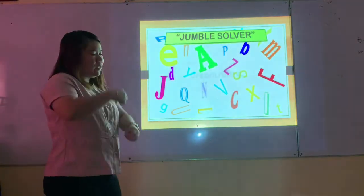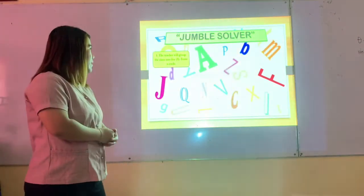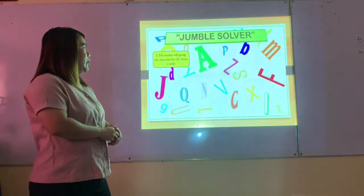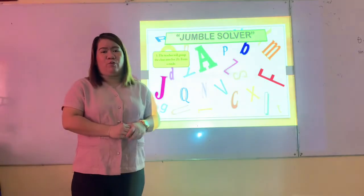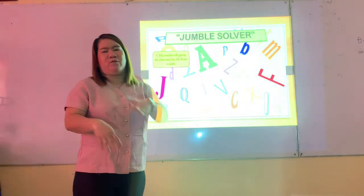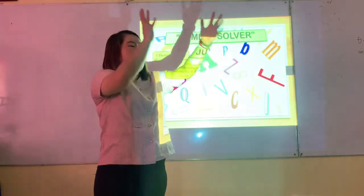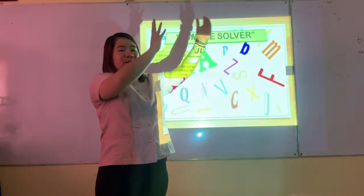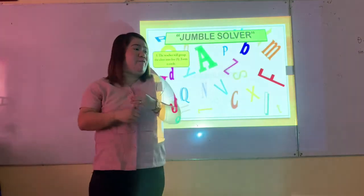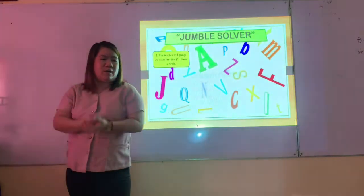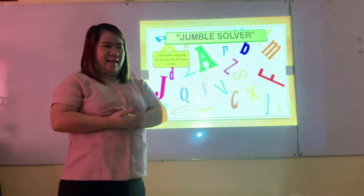Here are the instructions. First instruction: the teacher will group the class into five — first group, second group, third group, fourth group, and fifth group. I'll give you 30 seconds to form a circle.